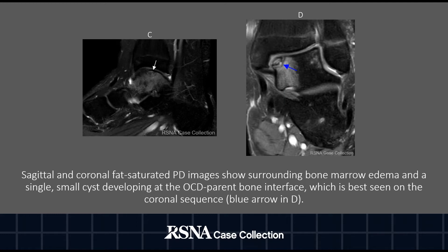Sagittal and coronal fat-saturated PD images show surrounding bone marrow edema and a single small cyst developing at the OCD parent bone interface, which is best seen on the coronal sequence, denoted by the blue arrow.